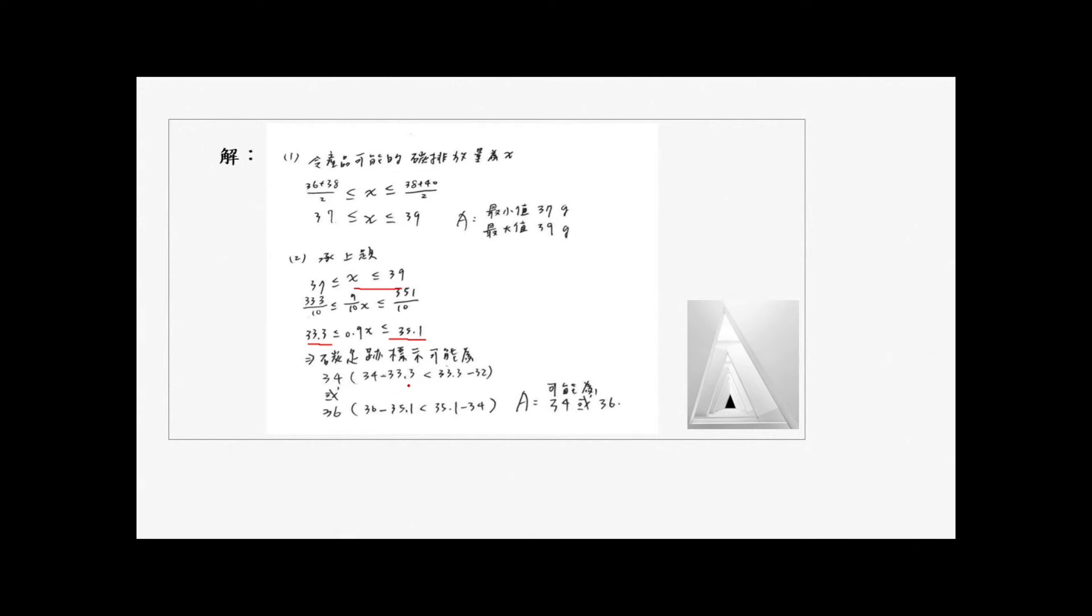各位同学看一下33.3或35.1,我们先看33.3是比较靠近32呢或比较靠近34。34减33.3的结果是0.7,那33.3跟32来减的话是1.3,所以是跟34的差距比较小,所以取34。35.1的部分,36跟35.1相减是0.9,那35.1减34等于1.1,所以是跟36差距比较小。所以它的所有可能性是34或36克。